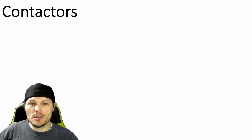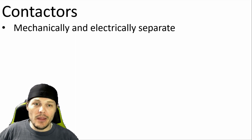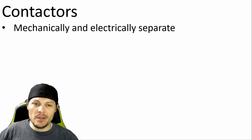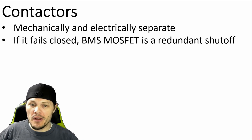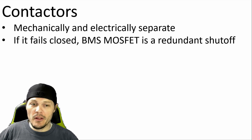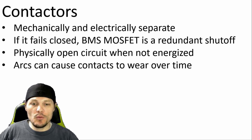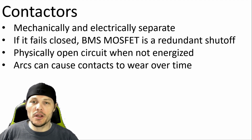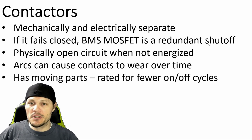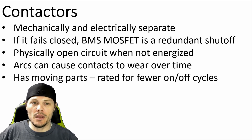With that said, let's summarize the main pros and cons of electromechanical switches. A contactor would be mechanically and electrically separate from other components — I'd have to buy an extra thing, but it would also be able to fail separately, so that's a pro and a con. A contactor can fail in the open or shut position. If it fails open, everything is protected and safe. If it fails shut, there's still the battery management system MOSFET as a redundant switching system. Contactors are physically air-gapped when the circuit is open, and when closed, an energized electromagnet holds it in place. Contacts can wear over time due to carbon buildup and pitting from arcing, but that's not generally going to be a problem since I don't expect arcing. Contactors also have physically moving parts, so they're rated for far fewer cycles than a MOSFET strategy.